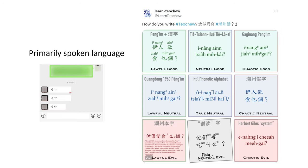Another interesting thing about this language is it's a primarily spoken language and not a written one. Here's a funny Twitter post about all the ways you can write the phrase 'yi nang ai jia mi gai.' Native speakers do occasionally write it using Chinese characters, but the difficulty is there's no standardized form of doing so. Different speakers might write the same words using different Chinese characters. This is usually not a problem because whenever people need to write something, they write it in standard Chinese, since basically everybody who speaks Diaoju also speaks Mandarin Chinese.